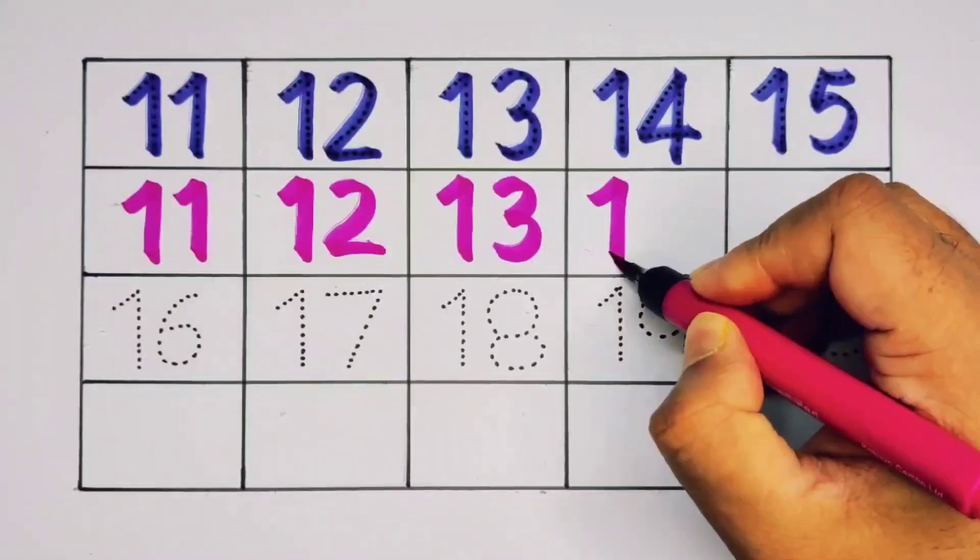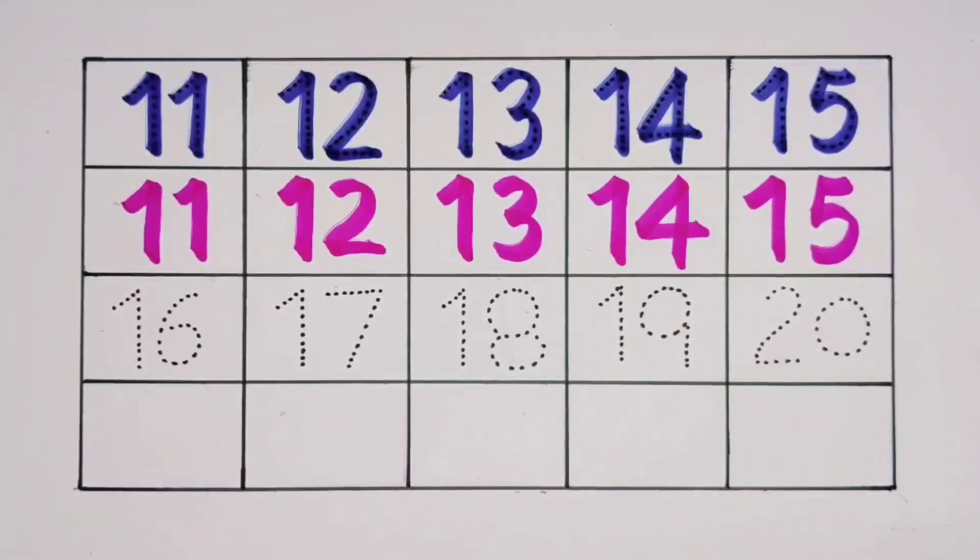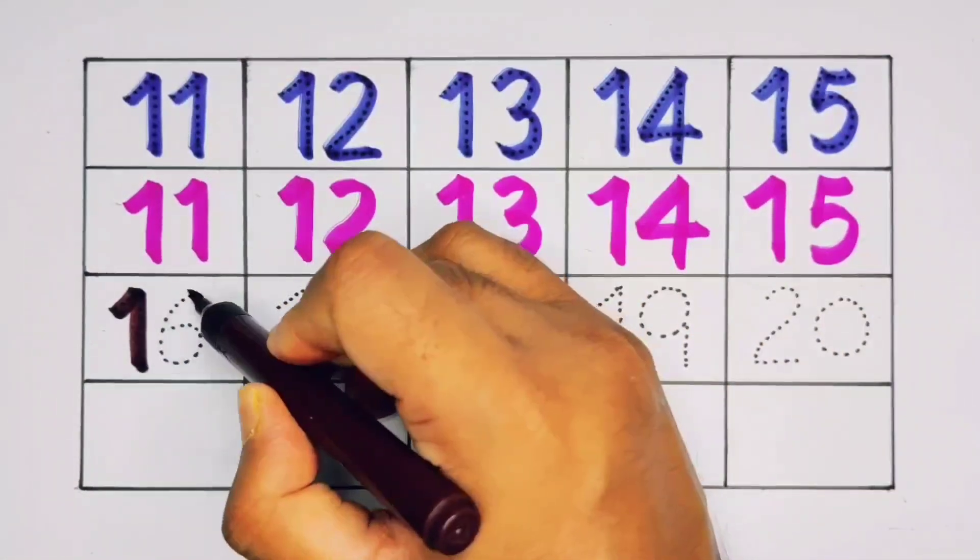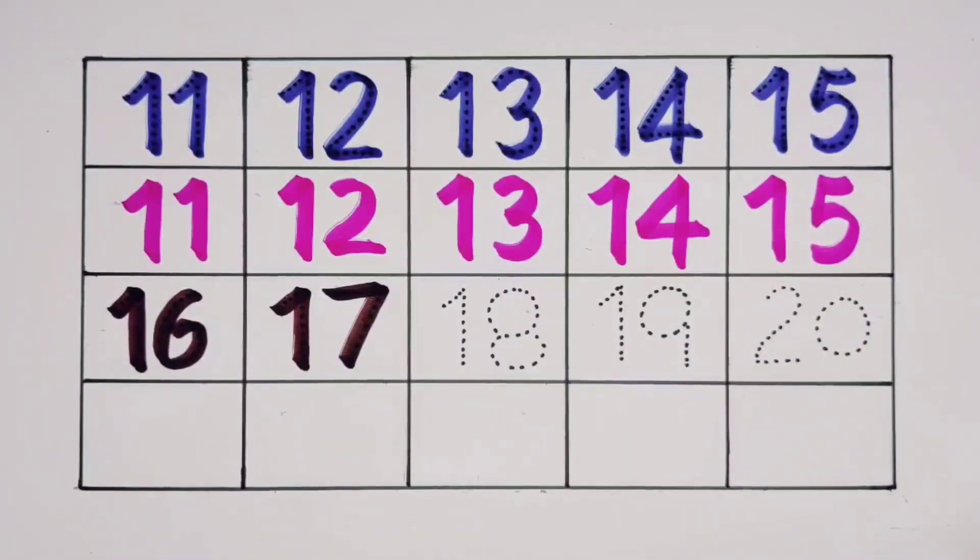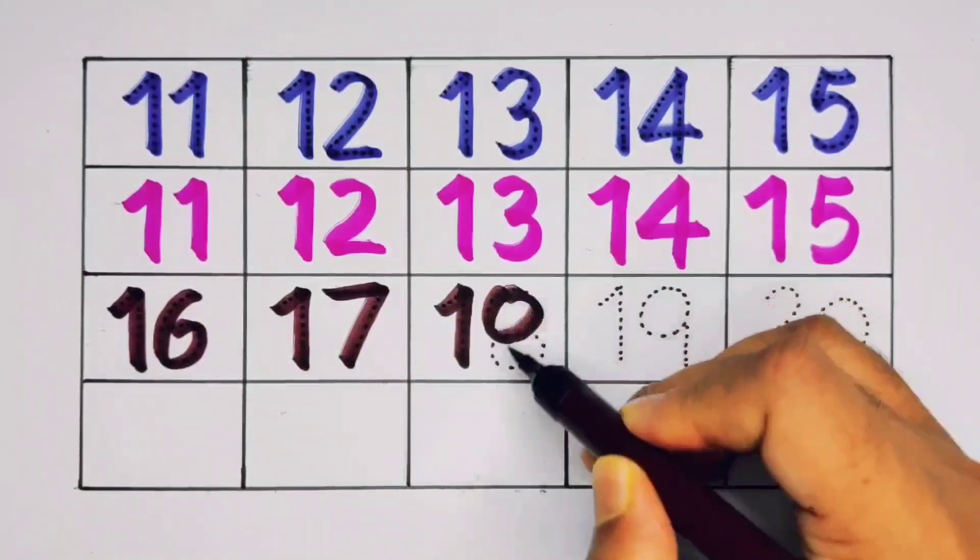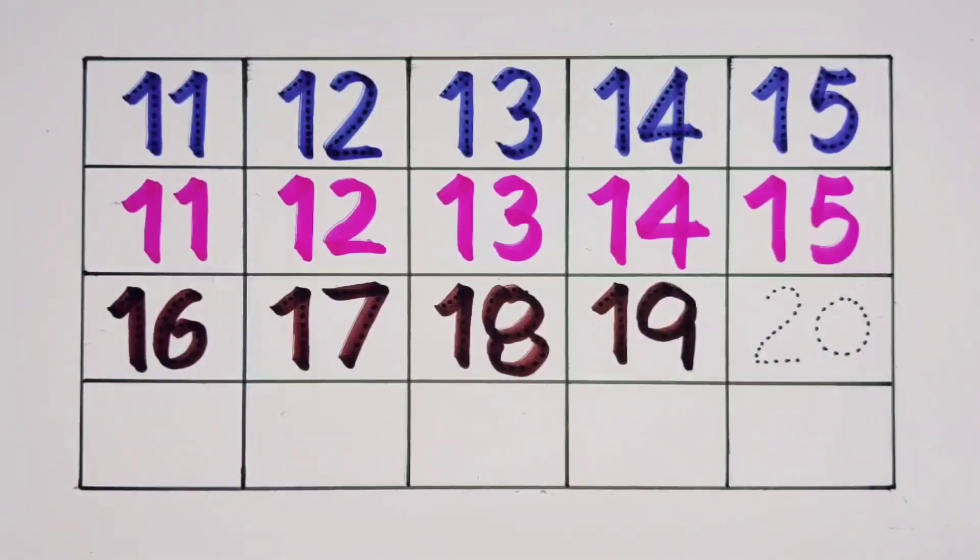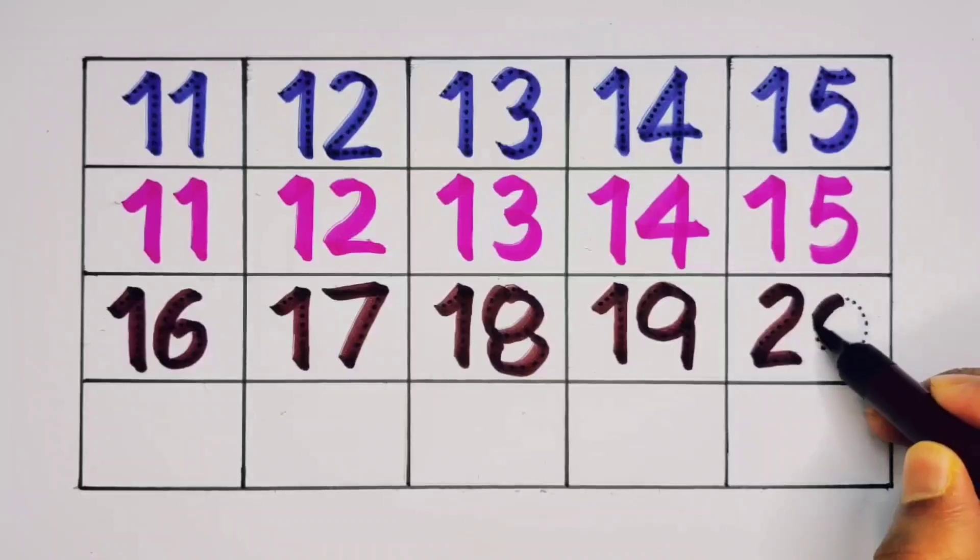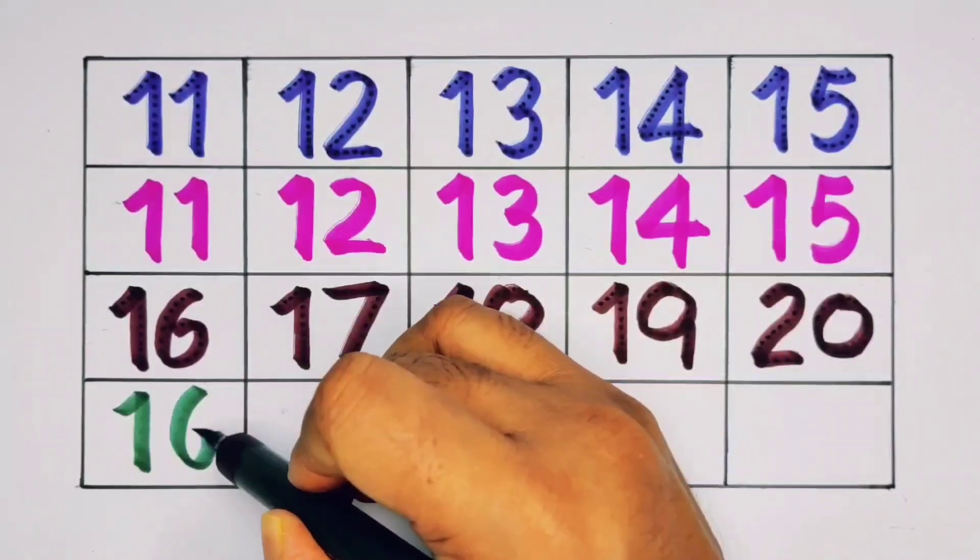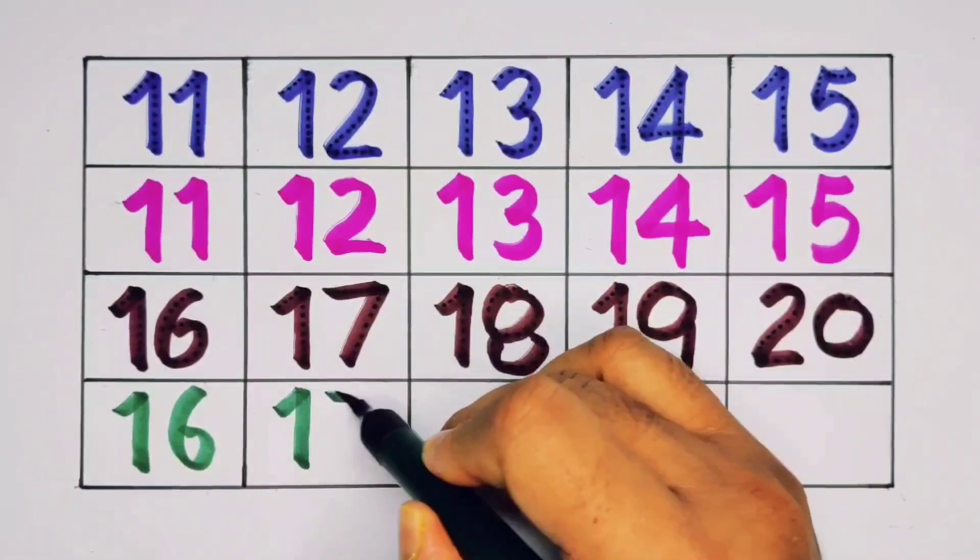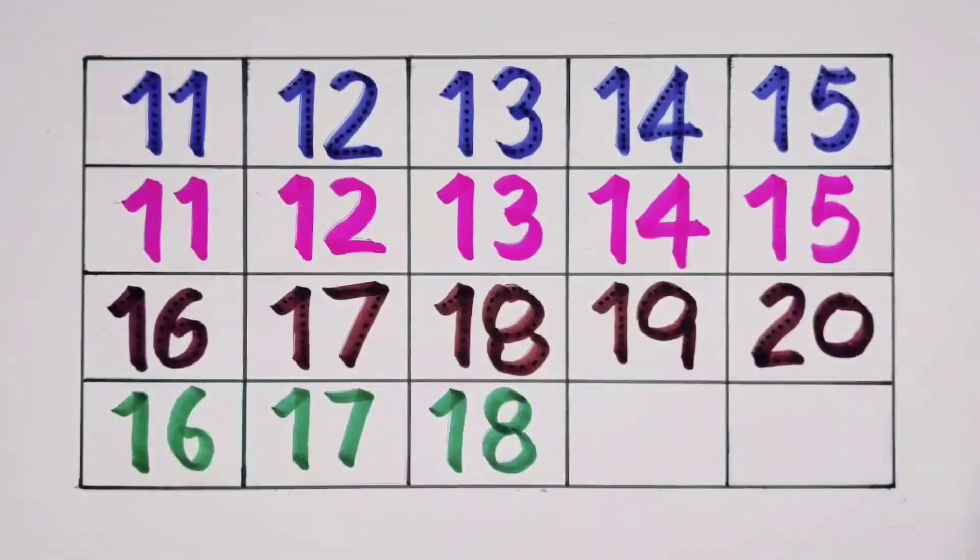Now one six sixteen, one seven seventeen, one eight eighteen, one nine nineteen, two zero twenty. We repeat again: one six sixteen, one seven seventeen, one eight eighteen, one nine nineteen, two zero twenty.